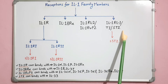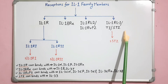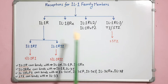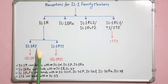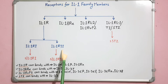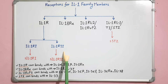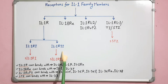and IL1RL1, also known as T1ST2. The interleukin-1 receptor exists in two forms: interleukin-1 receptor type 1 (IL1R1) and interleukin-1 receptor type 2 (IL1R2). However, only IL1R1 can transduce signals in response to ligand binding; IL1R2 is an inactive receptor.